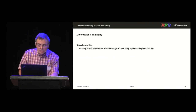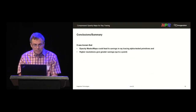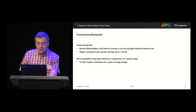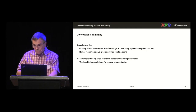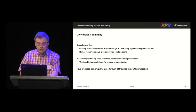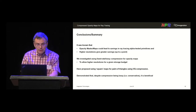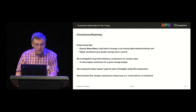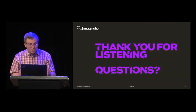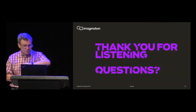In conclusion, we already knew that opacity masks could lead to savings in ray tracing with alpha-tested primitives, and that higher resolutions gave greater savings up to a point. We investigated using fixed-rate compression for opacity maps, which allows higher resolution for the same storage budget. We proposed using square maps for pairs of triangles with VQ compression, and demonstrated that despite the compression being lossy, it is beneficial. Thank you for listening — any questions if there's time?